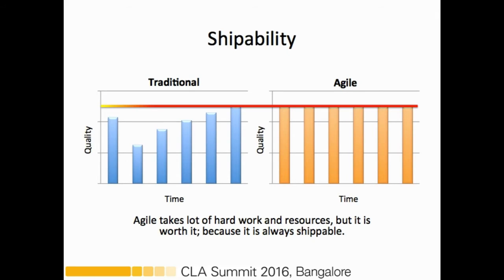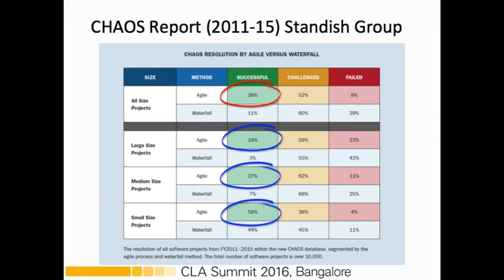Comparing the traditional and agile methods: agile takes a lot of hard work and resources, but it is worth it because the project is always shippable. Looking at the Chaos Report published by the Standish Group annually, comparing data from 10,000 projects over the last five years, you can see that the agile method has been relatively better than the waterfall method.